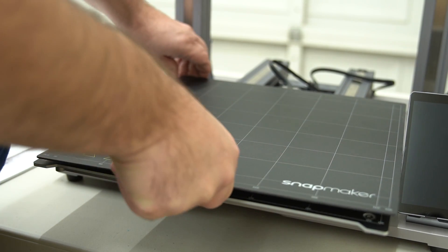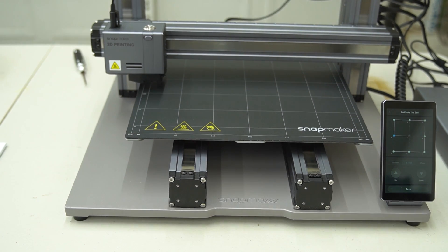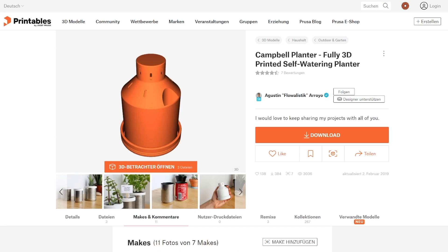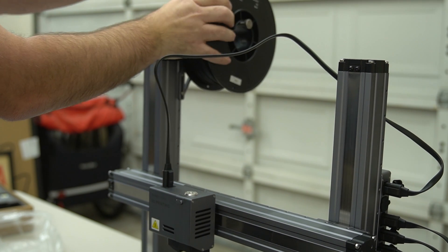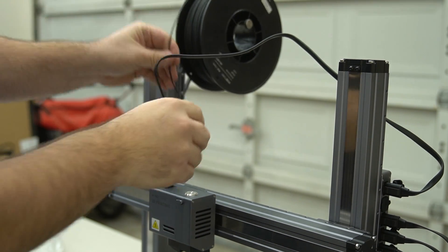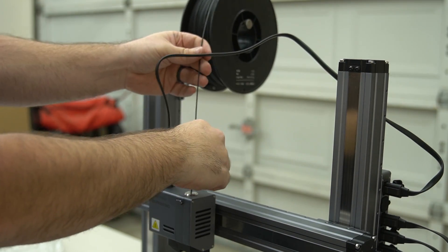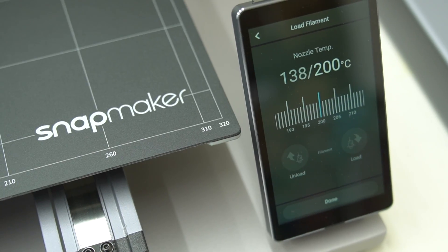Now that we've got the Snapmaker assembled, let's test out each of its capabilities. To test out the 3D printing function, I picked this cool self-watering plant pot project. This is a design I paid for, and I'll leave a link down in the description. I loaded the model into the included software, which is called Snapmaker Lubon. So let's see how this goes.